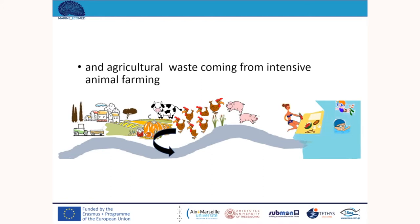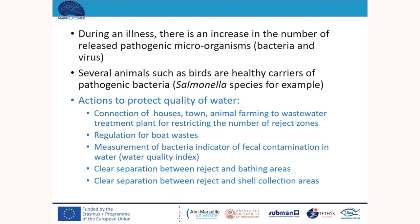Pathogenic microorganisms can also come from waste of intensive animal farming. They can be released in a river and end up in the sea if the excrements are released or stored near a river and can diffuse toward it because of important rain. During an illness, there is an increase in the number of released pathogenic microorganisms. In addition, several animals such as birds are healthy carriers of pathogenic bacteria such as Salmonella species. Actions to protect water quality include: connection of houses, towns, and animal farming to wastewater treatment plants to restrict the number of reject zones.